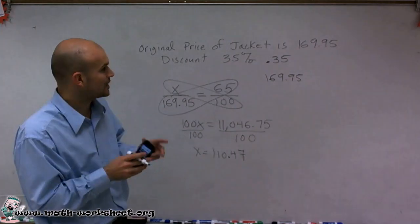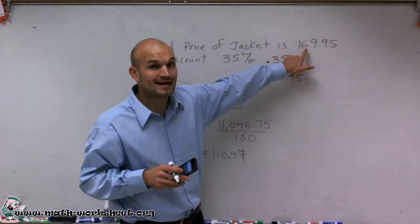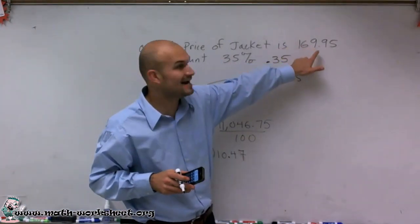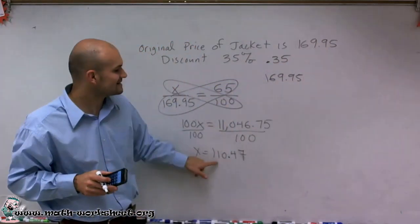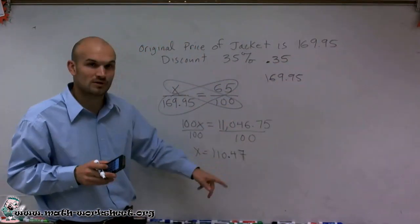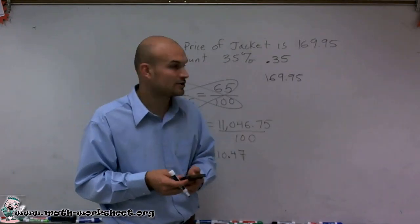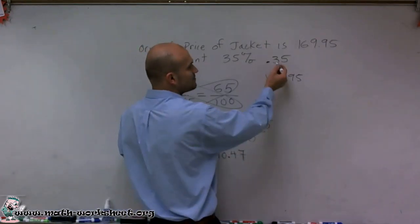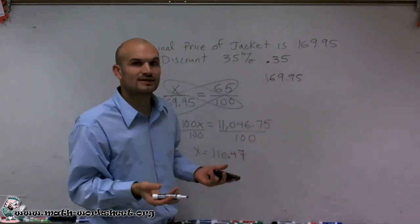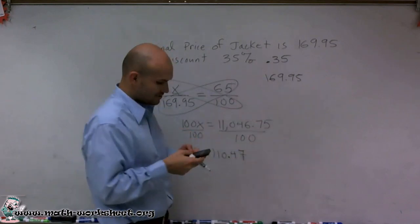So what I could do is take $59.48 and subtract it from $169.95, and I would get $110.47. The other way, which is a little bit quicker to do, is if this is going to give you the amount discounted, well, let's just find what that unit price would be.